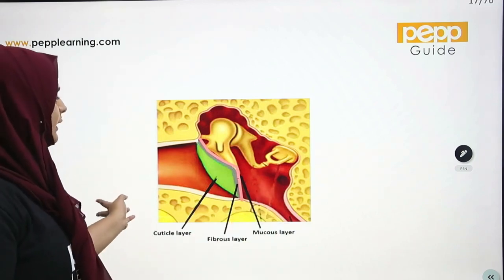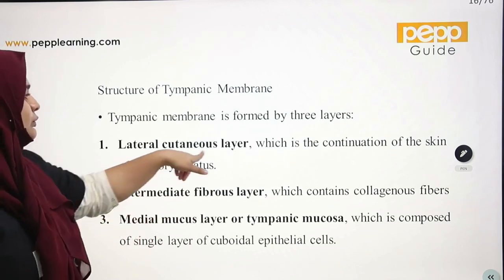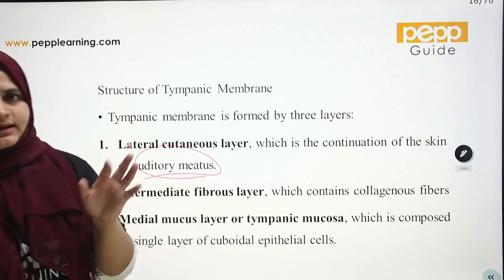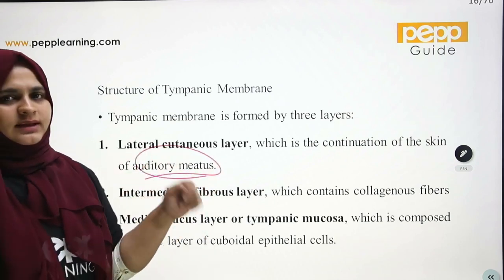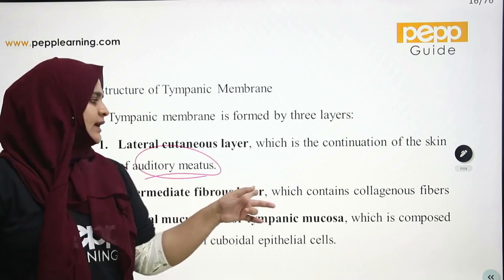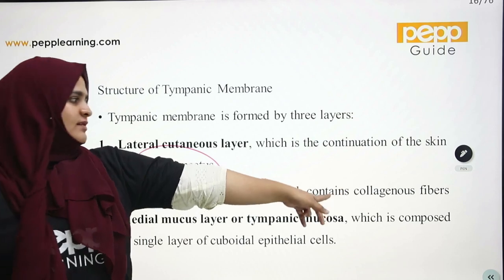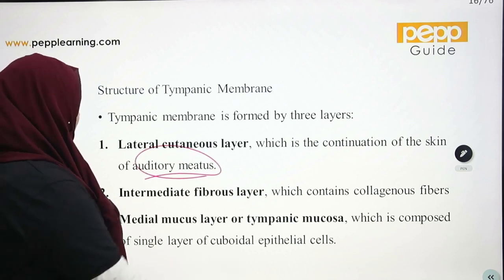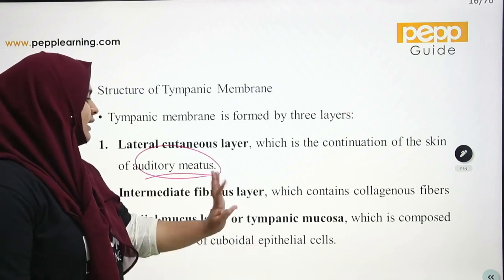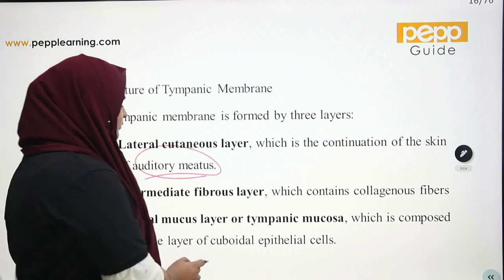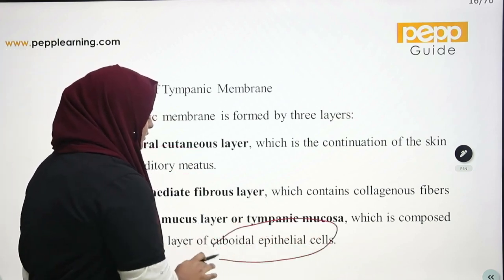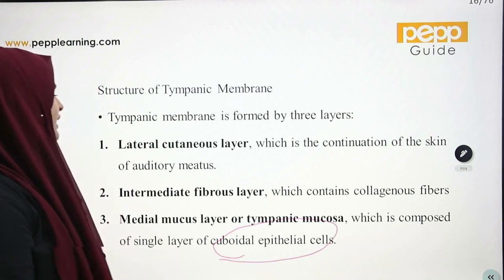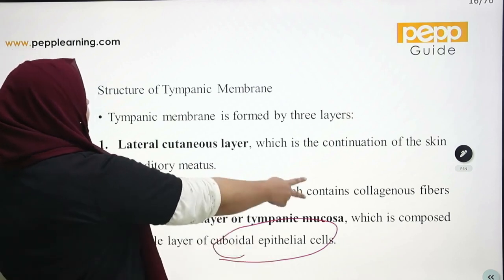The lateral cutaneous layer is continuous with the skin of the external auditory meatus. The intermediate fibrous layer consists of collagenous fibers. The medial mucous layer is composed of a single layer of cuboidal epithelial cells.